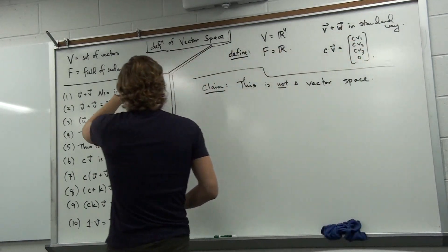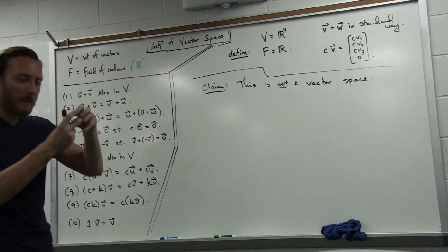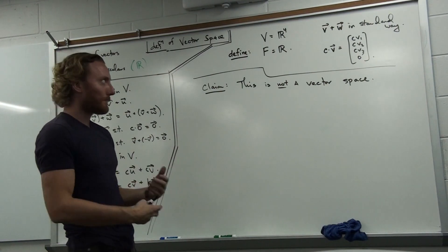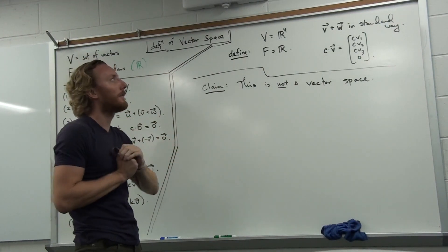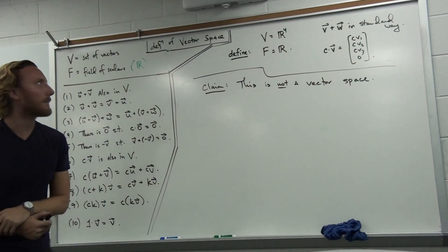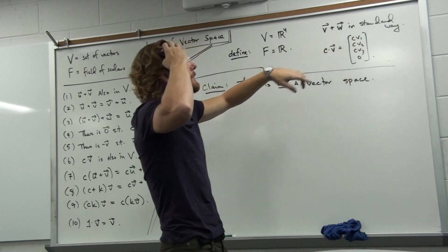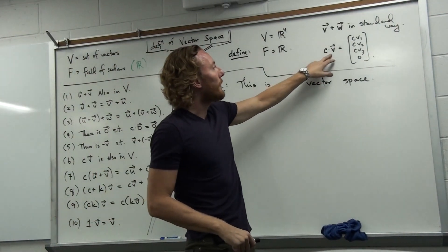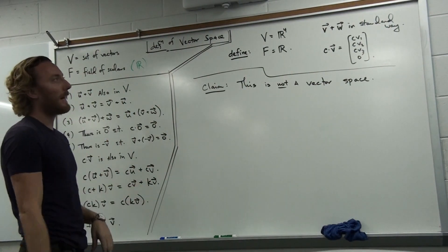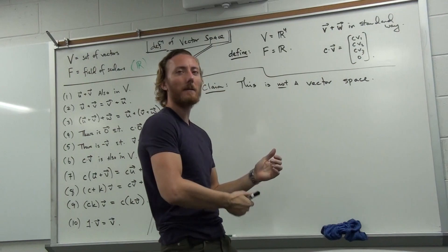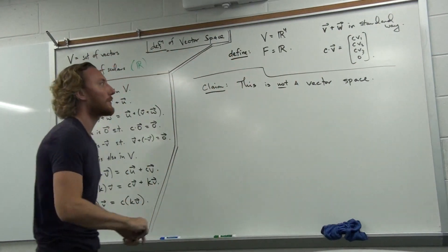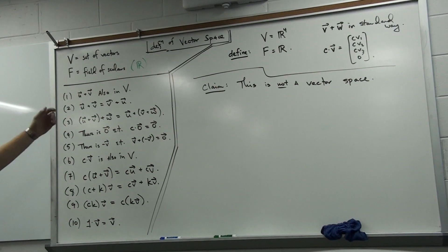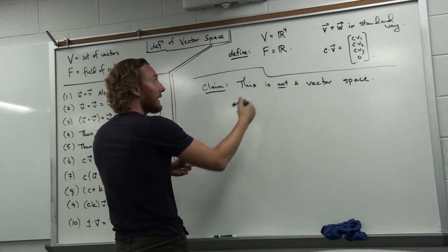What we went through in the example was: if you let your field of scalars be the real numbers and your vectors be standard vectors with four entries, this passes the test. However, here's what I want to show you: if you define your operations a little bit differently from the standard way, you can actually get something that's not a vector space. So check it out — what if you define vector addition in the standard way, adding two vectors component-wise: first, second, third, fourth component — but what if instead you defined scalar multiplication so that the fourth component is always zero?